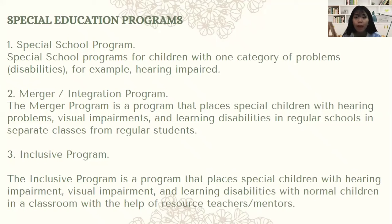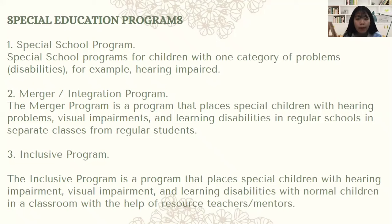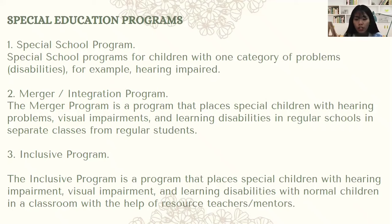There are three types of programs in special education. The first one is the special schools program, which is for children with one category of problems or disabilities, for example, hearing impaired. The second one is the merger or integration program, which places special children with hearing problems, visual impairments, and learning disabilities in regular schools in separate classes from regular students. The last one is the inclusive program, which places special children with hearing impairment, visual impairment, and learning disabilities with normal children in a classroom with the help of resource teachers or mentors.